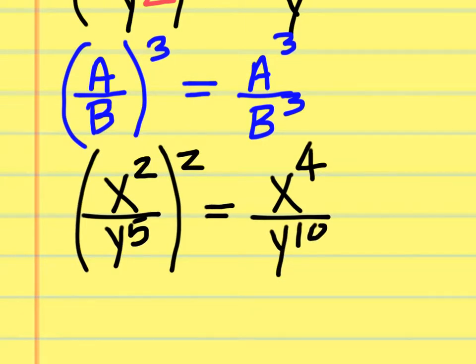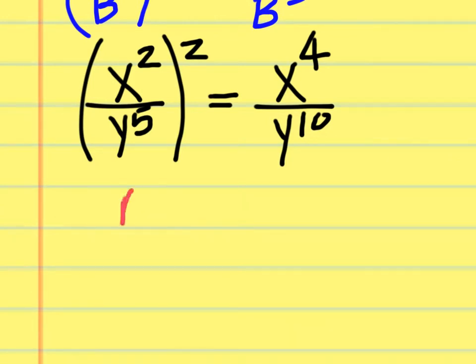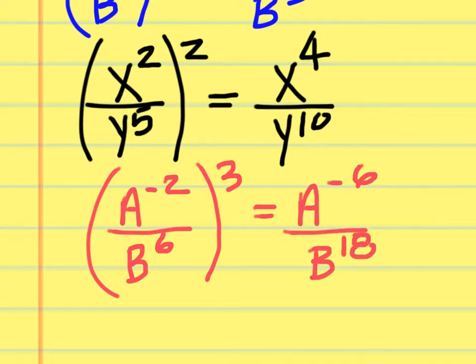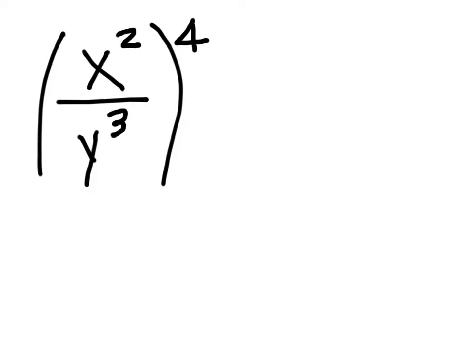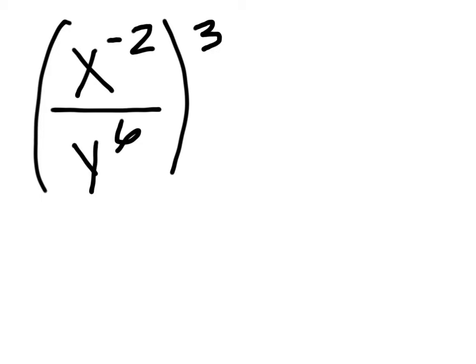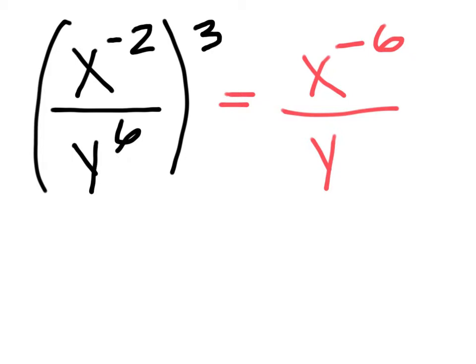Distribute the exponent to each term inside. For instance, (a to the negative 2 over b to the 6th) to the third power distributes the 3 to give a to the negative 6 over b to the 18th. Student answers: the first problem simplifies to x to the eighth over y to the twelfth, and the second gives x to the negative sixth over y to the twelfth.